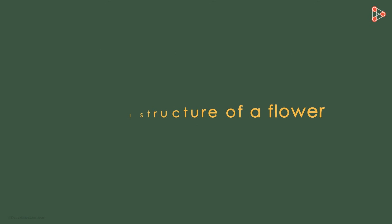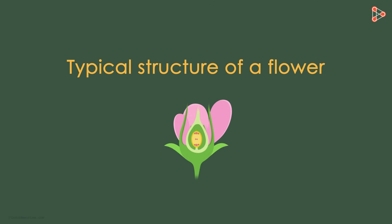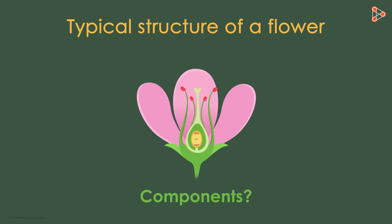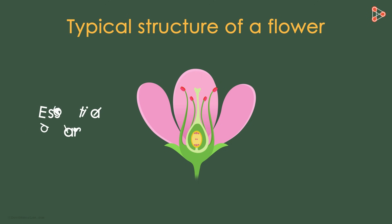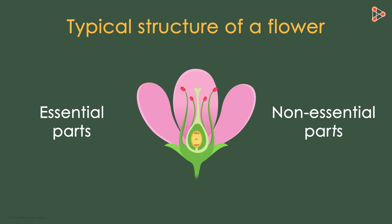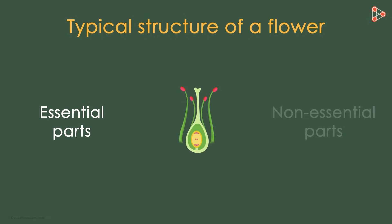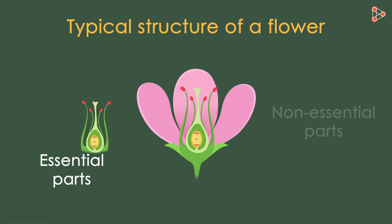But before that, let's have a look at the typical structure of a flower. A flower has mainly two components. Every flower is mainly composed of two parts — they are the essential and the nonessential parts. The parts of a flower such as the stamen and the pistil, which are the reproductive parts, are the essential parts.